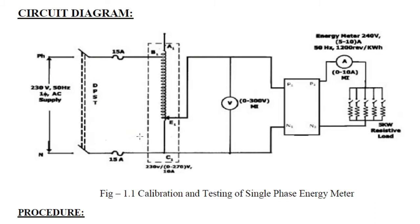We are going to give the supply to P1 and N1 through the auto transformer. The load terminals are connected to P2 and N2. An ammeter is connected at the load side to measure the load current, and resistors are connected through switches as the resistive load. We are going to turn on each resistance value and observe how the meter reacts.